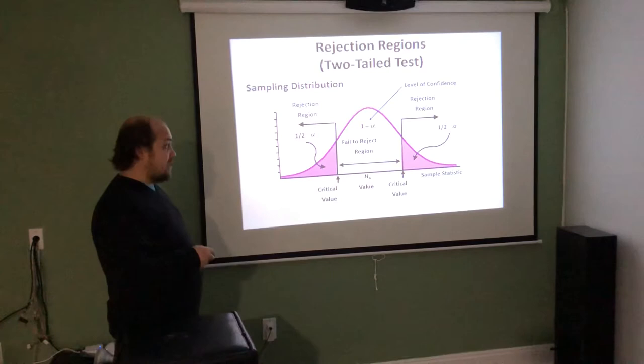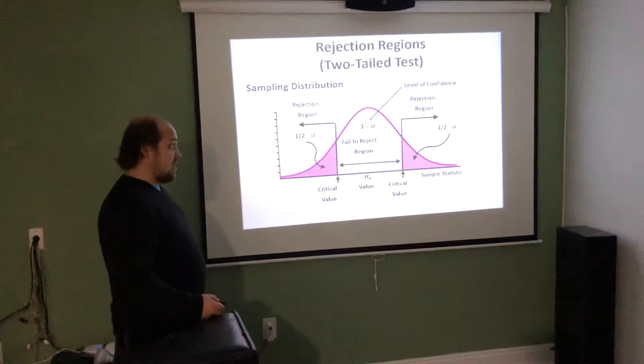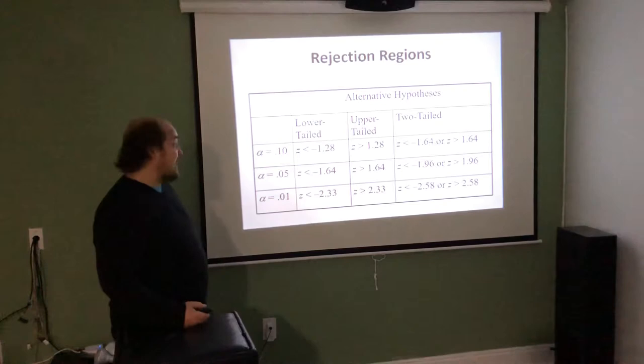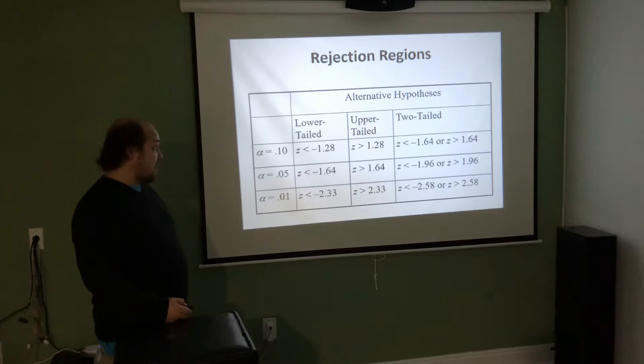In a two-tailed test, we have to look at having half the region of rejection on each side. If we want 90% confidence, there would be 5% of the rejection region on each side. If either we got a really high sample value or a really low sample value, either of those two would allow us to reject. These are the key rejection regions to write in your notes. For alpha = 0.10, for a left-tail (less than) test, you need z < −1.28.